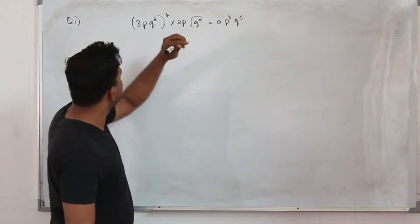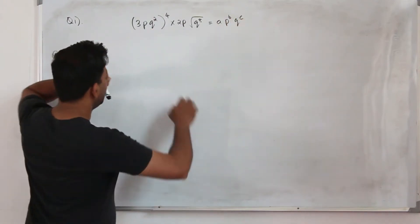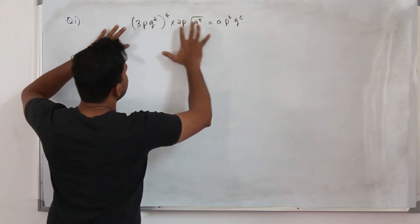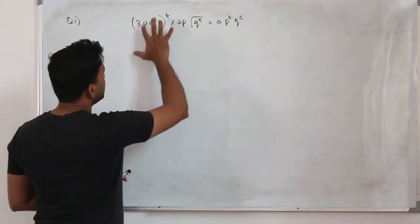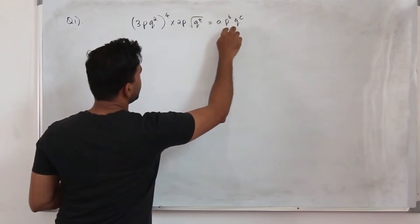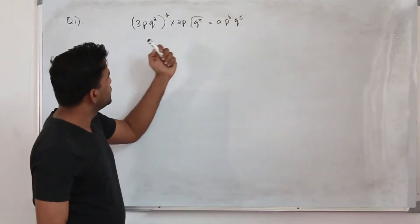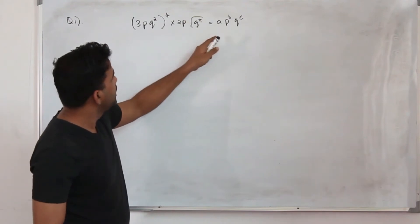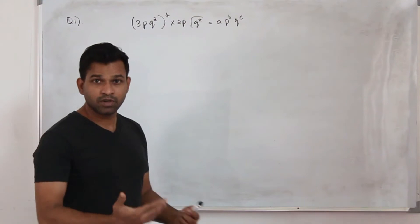Look at this question. They want you to find the value of a, b and c. That means we need to simplify this whole thing using laws of indices and try to make it in this form: a number times p to the power something and q to the power something. Then you can say the number equals a and the exponent of p is b, exponent of q is c. That's what we are going to do.